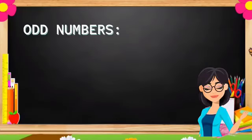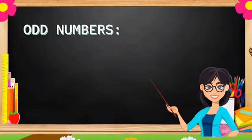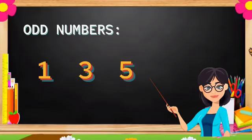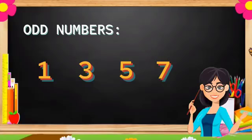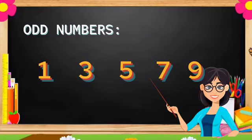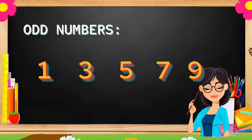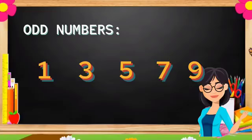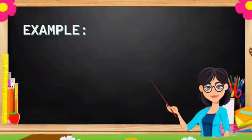These are the odd numbers: 1, 3, 5, 7, and 9. Once again, 1, 3, 5, 7, and 9. Odd numbers, they end with 1, 3, 5, 7, and 9.